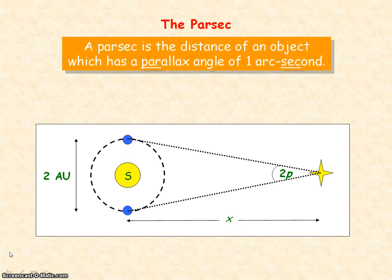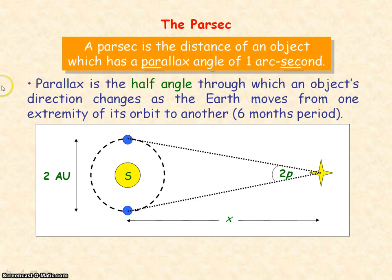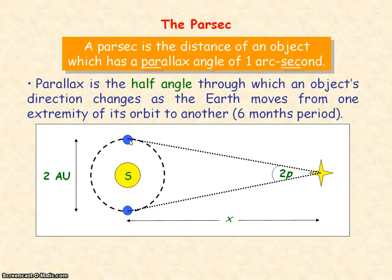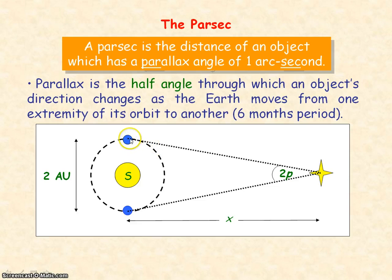The parsec is the distance of an object which has a parallax angle of one arc second. Parallax is the half angle — an object's direction appears to change as the Earth moves from one extremity of its orbit to another, so over a six month period. When Earth is at one position, it will see the star in one direction, and as the Earth moves in its orbit, the direction in which it sees the star will change. After six months, the angle at which it sees the star will have changed by 2p, twice the parallax.